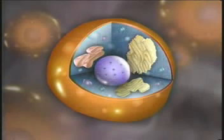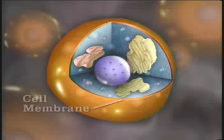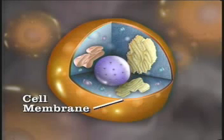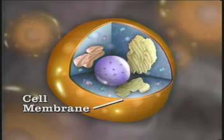Surrounding the outside of the cell is the cell membrane. This membrane is very thin, only about one one-hundred-thousandth of a millimeter thick. A photograph of a cell membrane taken with the help of an electron microscope reveals that it has three layers — two dark outer layers sandwiching a clear middle layer.